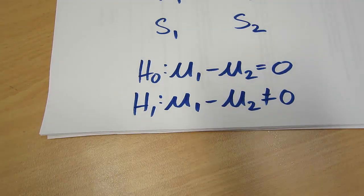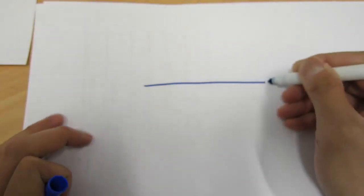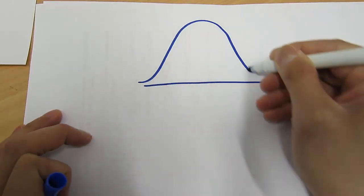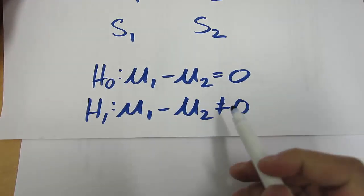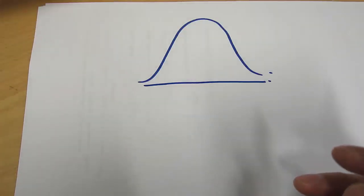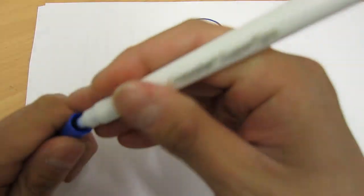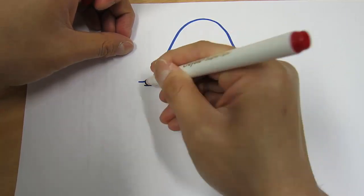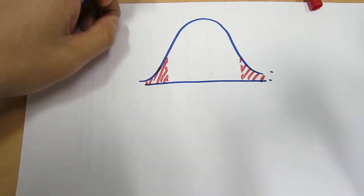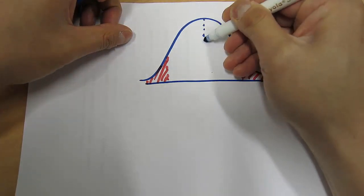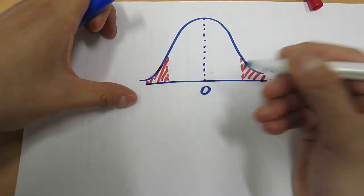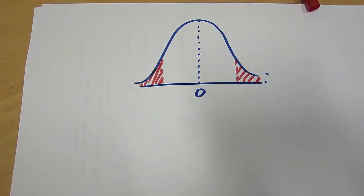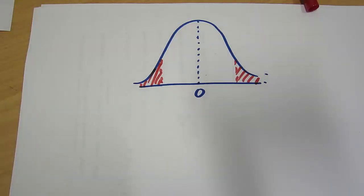The next thing you have to do is calculate the t-statistic and draw the rejection region on the standard distribution. This is a two-tailed test because we have a not-equal sign in the alternate hypothesis. Because it's a two-tailed test, we have two rejection regions — one at the upper tail and one at the lower tail. The student t distribution is symmetrical around zero. At this point, it gets a little bit tricky — you have to make some assumptions.